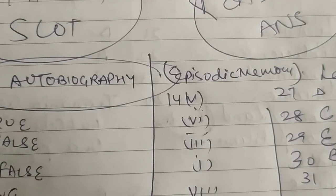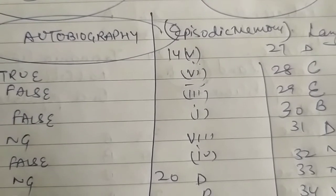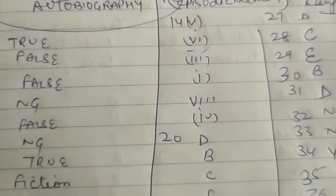Fourteenth is fifth, fifteen sixth, sixteenth third, seventeenth first, eighteenth is eighth, then nineteenth is fourth, then D, B, C.